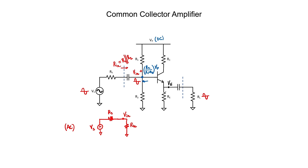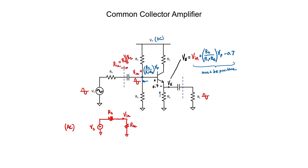Let's find our emitter voltage. We're assuming the transistor is always in the forward active mode and that it's a silicon transistor, so we should always have a 0.7 volt forward drop from base to emitter. This emitter voltage is just our base voltage minus 0.7 volts. To ensure the transistor stays in the forward active mode, we also need to make sure that our collector voltage is always higher than our base voltage. We could tie the collector directly to our DC power supply — the larger the collector resistor, the lower Vc will be, and if it's too large the transistor might be driven into saturation.